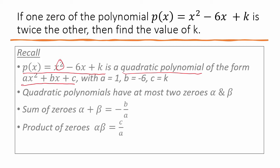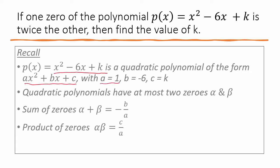So x² − 6x + k is of the form ax² + bx + c, where a = 1, b = −6, and c = k.